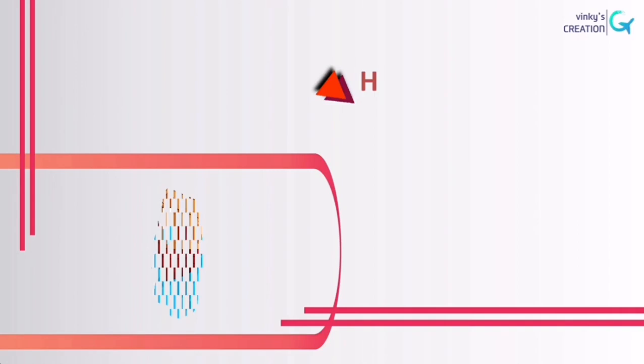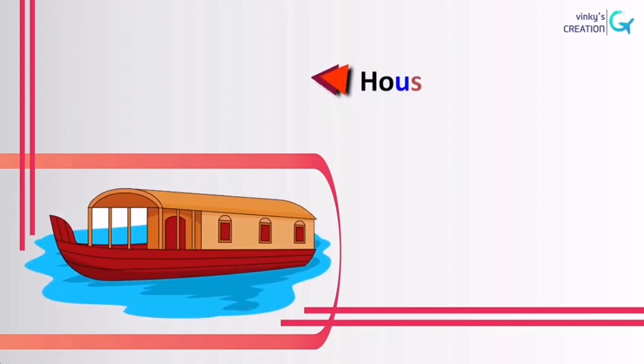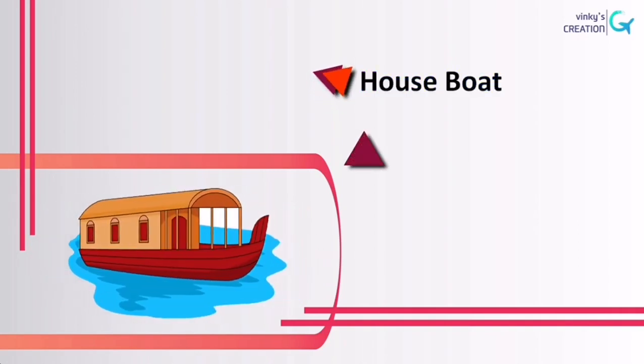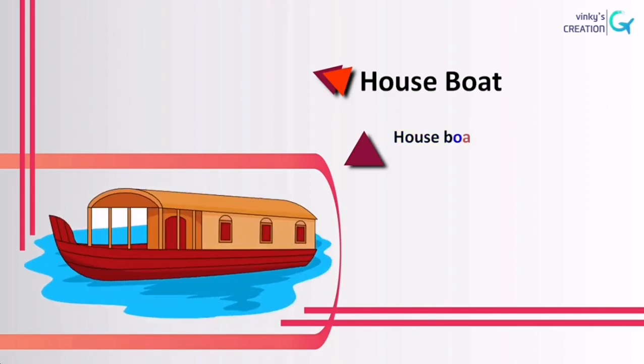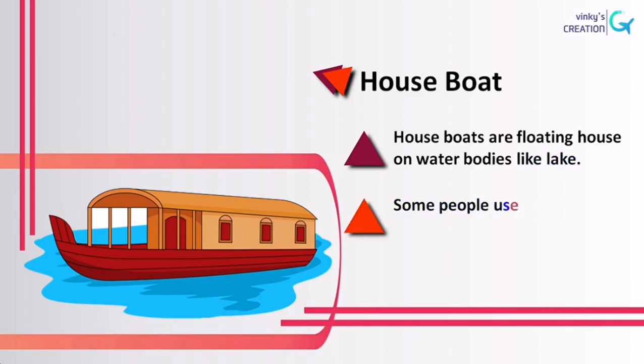Next type of house is houseboat. Houseboats are floating houses on water bodies like lakes. Some people use it for vacation purpose and some live permanently in the boat.